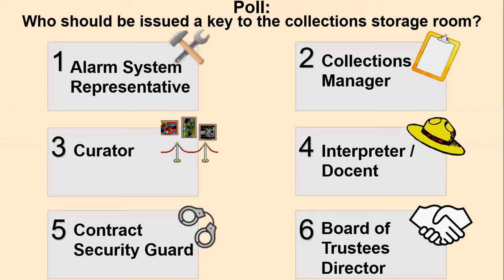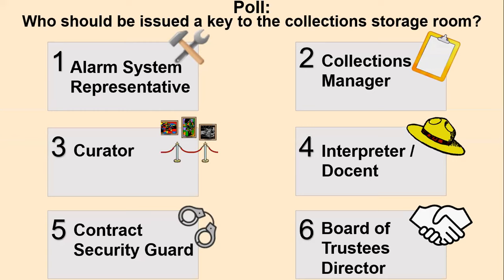I am going to open this up to you in the form of a poll of the following six positions: an alarm system representative who's working on changing out your intrusion detection systems; your collections manager; your curator; a part-time interpreter; your night guard; or the director of your board. Who should have on their key ring the key to your museum storage space? You can select multiple options, but there are correct and incorrect answers here. Let's give you about 45 seconds to respond and then we'll see how you fared.